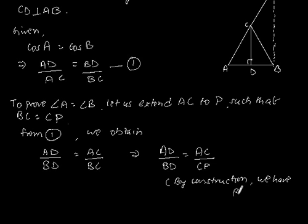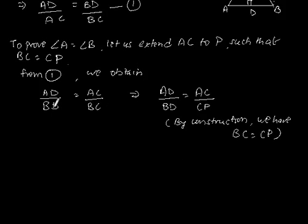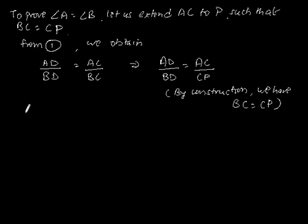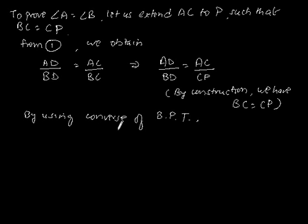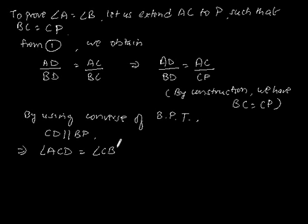We have BC is equal to CP. Now by using the converse of BPT, we get CD is parallel to BP, which implies angle ACD is equal to angle CPB, since they are corresponding angles.